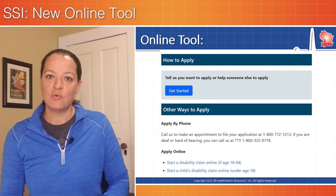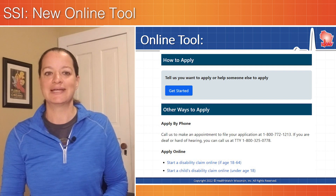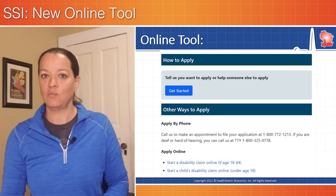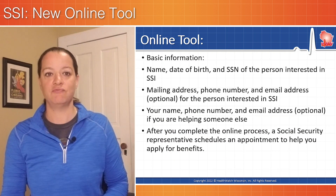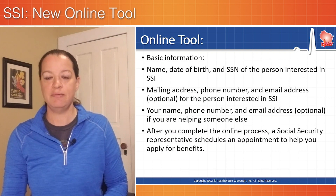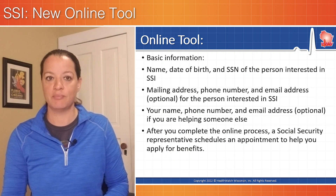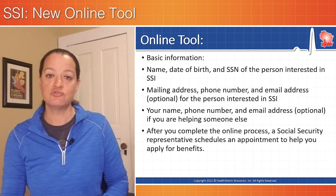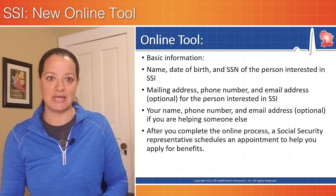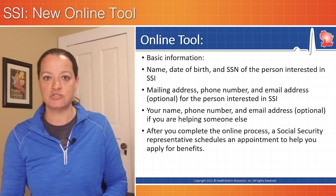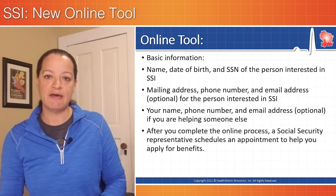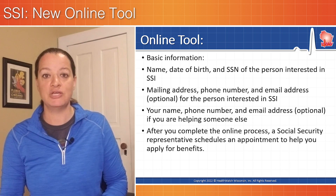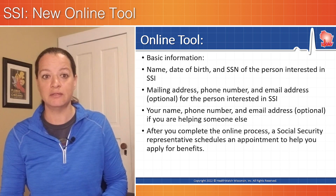When you visit the Social Security website, you're going to click Get Started — we link to this page in the description below. You're going to enter basic information: name, date of birth, Social Security number of the person interested in SSI, and some contact information. If you are filling out the form on behalf of somebody else, you're going to put your contact information as well.